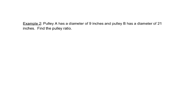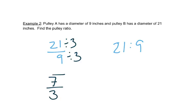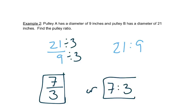Pulley A has a diameter of 9 inches, and pulley B has a diameter of 21 inches. Find the pulley ratio. So remember that the pulley ratio is always the bigger diameter to the smaller diameter. So we would put 21 over 9, or write 21 to 9, and then simplify it. So this can be divided by 3, which would give us 7 to 3, or 7 to 3. And either way it's written, we read it as 7 to 3.